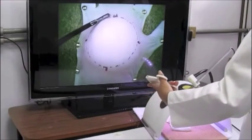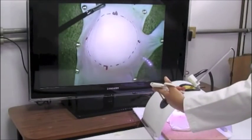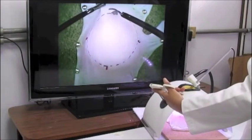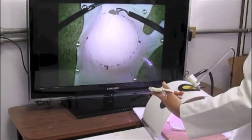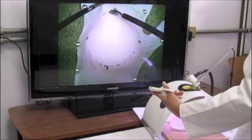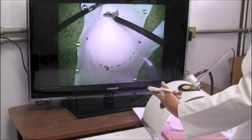In the cutting dissection task, the surgeon cuts a 4.5 cm diameter circle marked on a surgical glove containing a balloon measuring about 5 cm in diameter, and then extracts the balloon without bursting it.